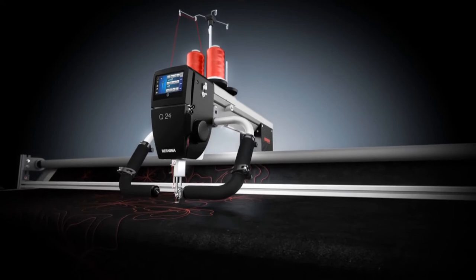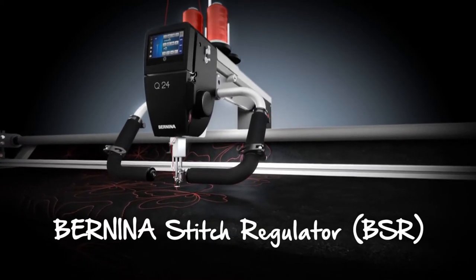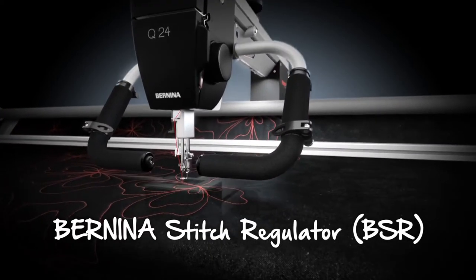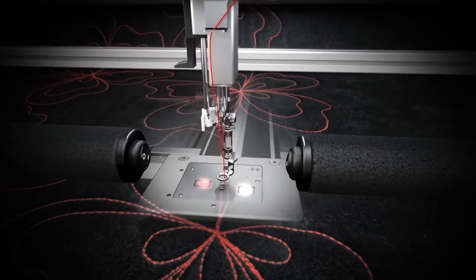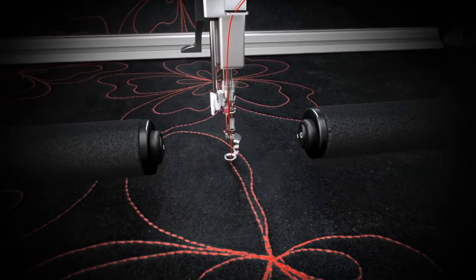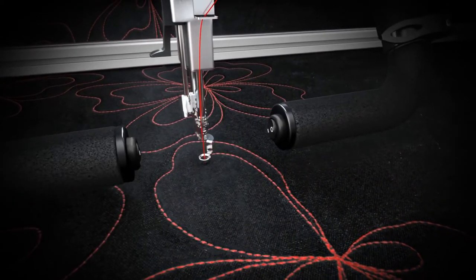One example is the built-in Bernina Stitch Regulator, BSR for short, which is equipped with two optical sensors. Featured on both the 24-inch and the 20-inch machines, it ensures that stitches are exactly the same length, regardless of the speed at which you quilt.